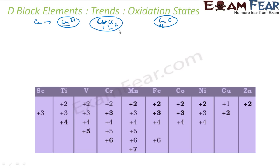If you see the D electron, the D orbital has 10 electrons and S has 2. So typically it can exhibit up to 12 oxidation states.